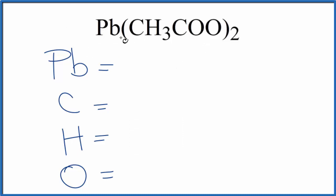For the lead, there's nothing written after it. So we're going to assume the subscript is one, one lead atom. Then for this acetate here, we need to take into account the two, because the two applies to everything in the parentheses. So we'll have one carbon here and the one carbon here. So two carbons times two, four total carbons.